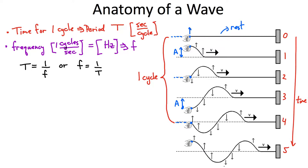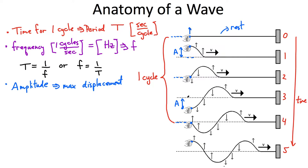I defined this distance A — it wasn't by accident. This is what we call the amplitude of the wave. The amplitude is the maximum displacement — basically the distance from equilibrium, which is where the dashed line was, all the way to the peak. I can also define it as the distance from equilibrium all the way to the trough, the lowest point. Be careful: it's not the distance from peak to peak. We're talking about the distance from zero to the peak or zero to the trough. Amplitude is measured in meters — it's a distance.